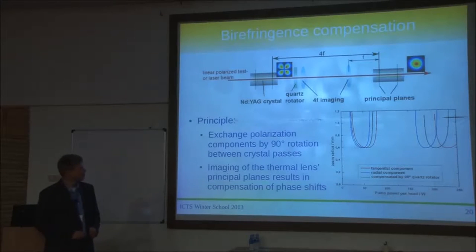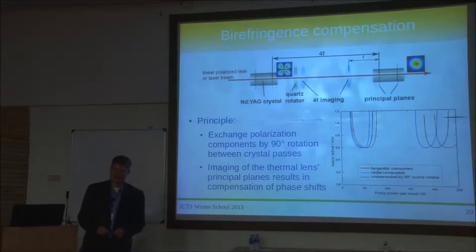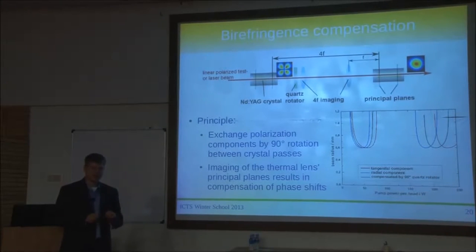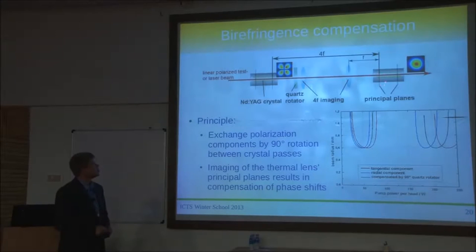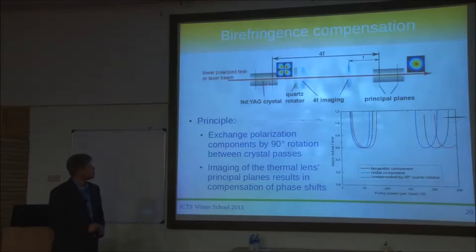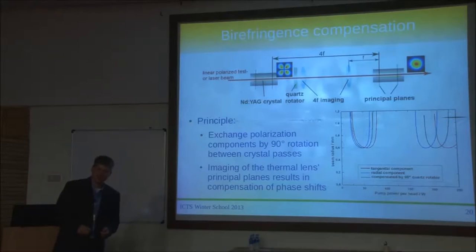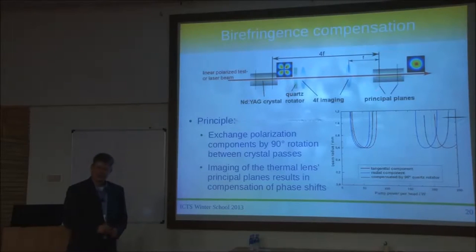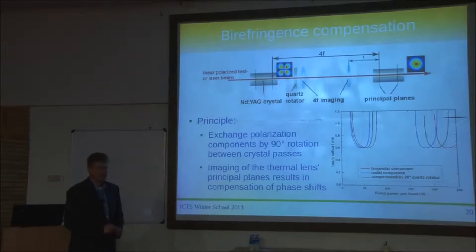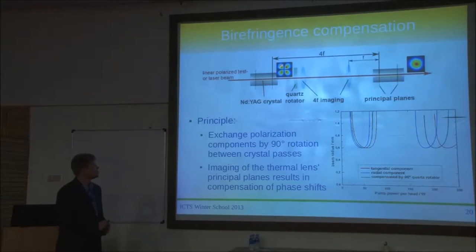There's a workaround for the birefringence problem, and that's basically the reason why the LIGO laser has an even number of crystals. Between each pair of crystals you can build compensation for these effects. The way it works is you do an imaging of two opposing crystals with a 90-degree rotation of the whole beam. That swaps the radial and tangential components between the two crystals — what's the radial component in the first crystal becomes the tangential in the second. This causes the two effects to almost perfectly cancel: you get a nice round beam profile again after the two crystals.